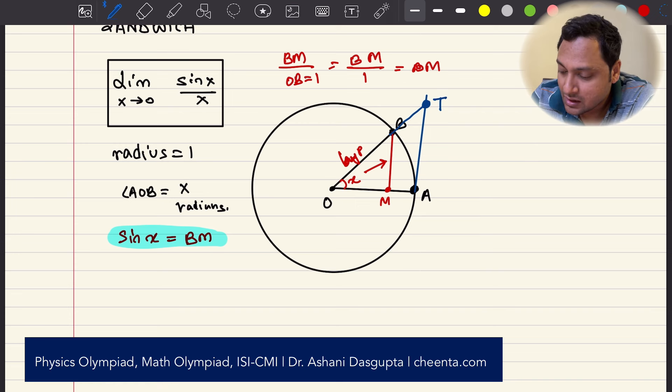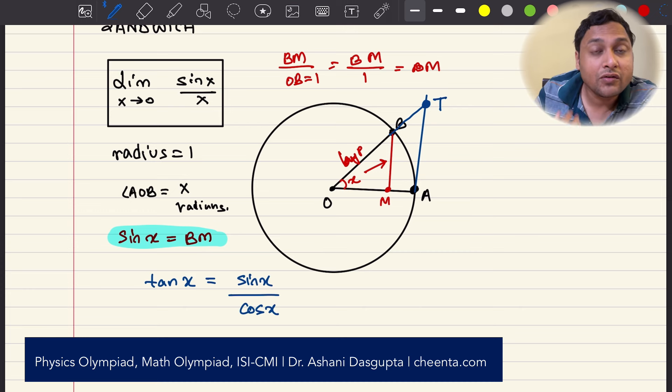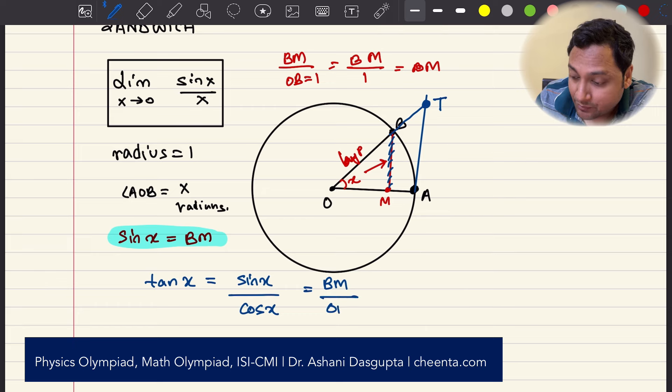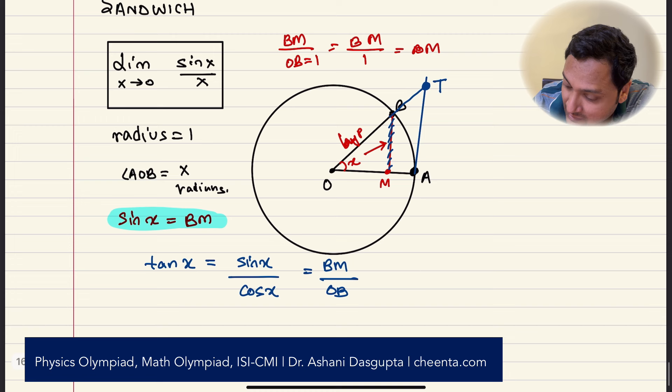Okay, so I don't know if you know about tan of x. Tan of an angle is just simply sin of x over cosine of x. We already know that sin of x is BM, which is this side. And cosine of x, you can check, is OM. This side, OM.